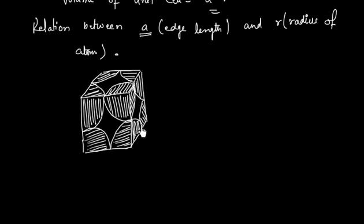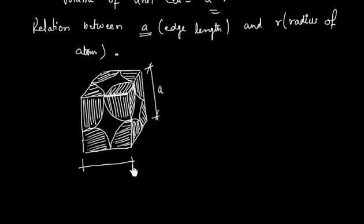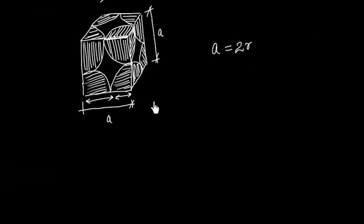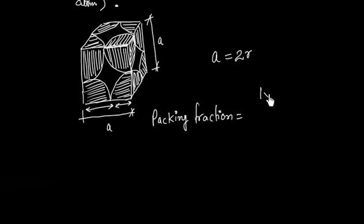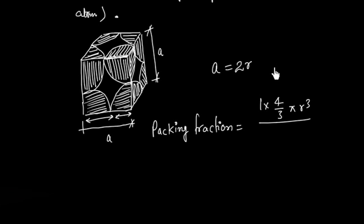Atoms touch along the edge, so a = 2r — the radius of one atom plus the radius of the adjacent atom equals the edge length. Now let us find the packing fraction: volume of atoms (1 × 4/3 πr³) divided by volume of the cube (a³).